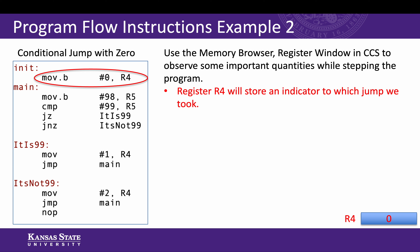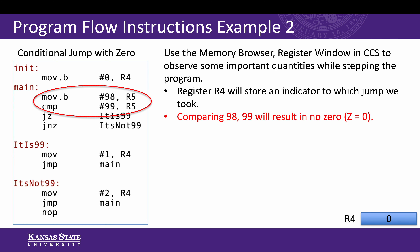When we begin our program, the first thing we're going to do is move a byte zero into register R4. Register R4 is going to indicate to us which jump we took later on in the program. Then in the main routine, we're going to move 98 into register R5. The next line, we're going to compare the number 99 with the contents of register R5. In this case, 98 and 99 are not equal — and here's the key — this results in a zero flag equal to zero.